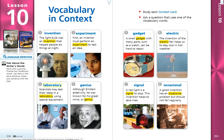Number 4. Genius. Although Einstein acted silly, he was known for his great mind, or genius.